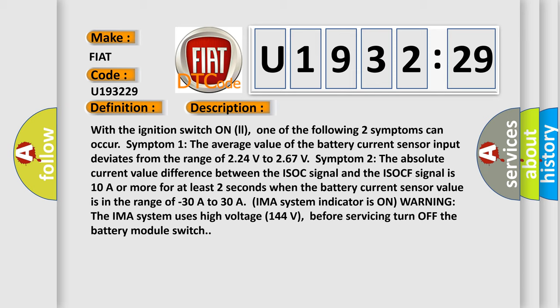Symptom 2: The absolute current value difference between the ISOC signal and the ISOCF signal is 10A or more for at least two seconds. When the battery current sensor value is in the range of minus 30A to 30A, IMA system indicator is on warning.